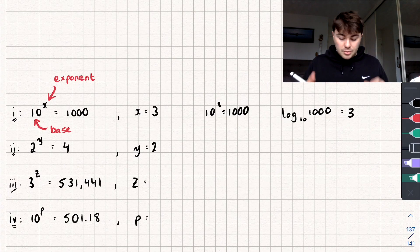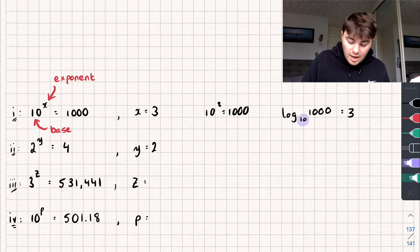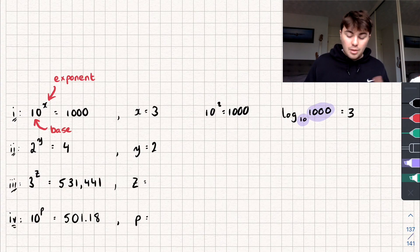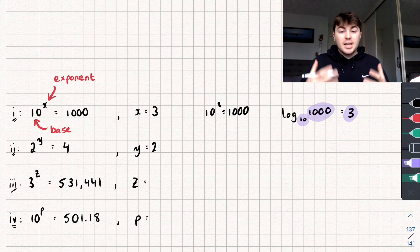What this is saying is, here's what logarithms are saying: if I have 10, what power do I need to raise it to to give me 1000? Well, I need to put it to the power of 3, or my exponent needs to be 3. So that's what the logarithm is saying.